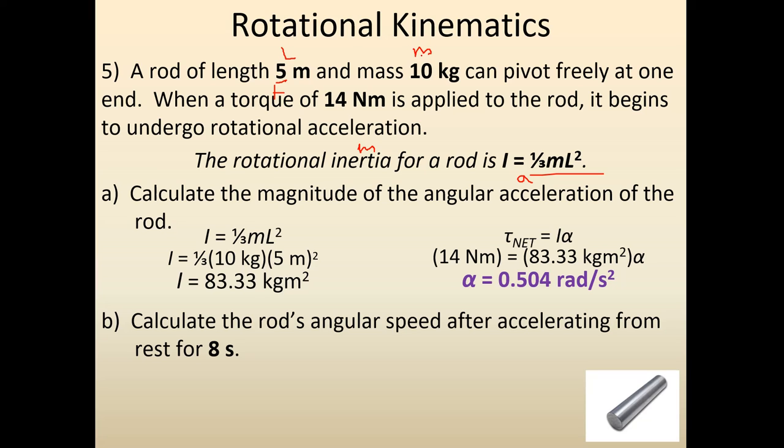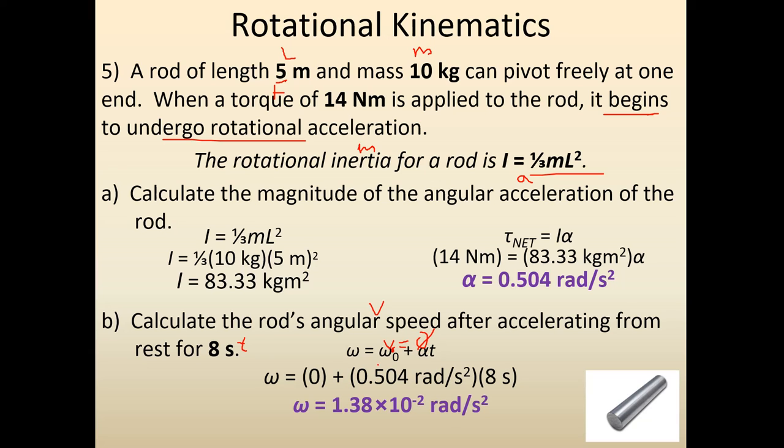Part B wants us to figure out what the final angular speed is after it's been accelerating for eight seconds. So again, it wants to know the rod's final speed. It's accelerated for a certain amount of time. It doesn't say it, but the initial velocity is 0, I guess, because it begins to rotate. So normally in the linear case, I would use v equals v naught plus a t. So I'm going to use omega equals omega naught plus alpha t. Plug my numbers in, and I'm getting this is my final angular speed.